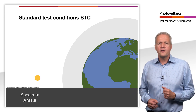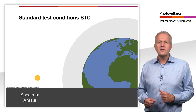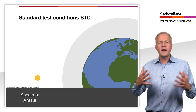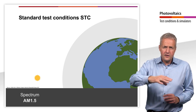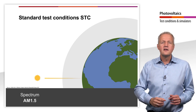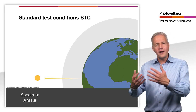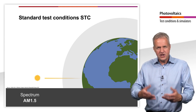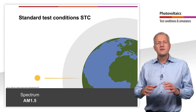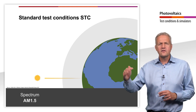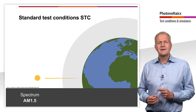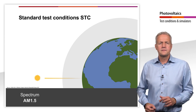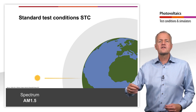To understand what is meant by AM1.5, let's take a closer look at the earth from the outside. The sun emits light with a certain spectral distribution, which is mainly determined by its surface temperature. This light hits the earth's atmosphere in space. As it passes through the earth's atmosphere, the solar radiation is absorbed to a greater or lesser extent depending on the wavelength, and the spectrum of the solar radiation is thereby massively changed. The longer the path of the light through the atmosphere, the stronger the change. To describe the path length through the atmosphere, the air mass AM is defined as the ratio of the actual path length of the light to the shortest possible path. Outside the earth's atmosphere, the spectrum is still unchanged — it is called the AM0 spectrum.